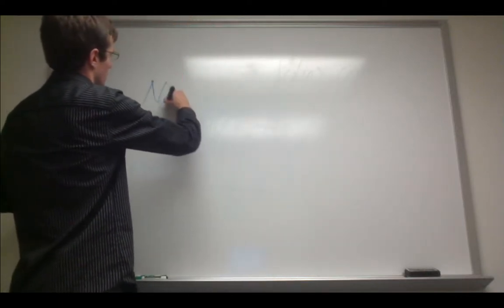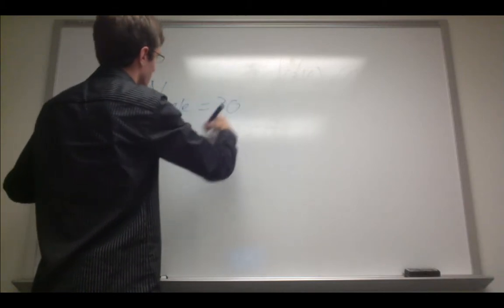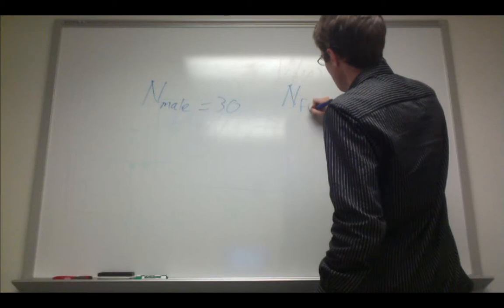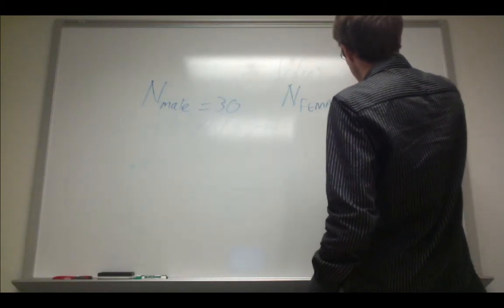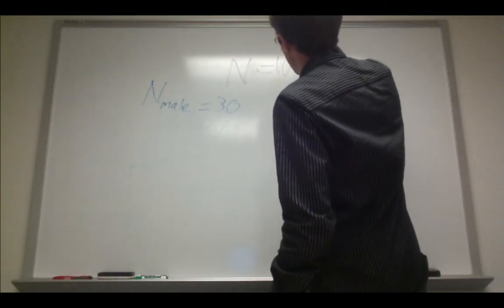So, n subscript male equals 30, and n subscript female equals 70, for a total of n equals 100.